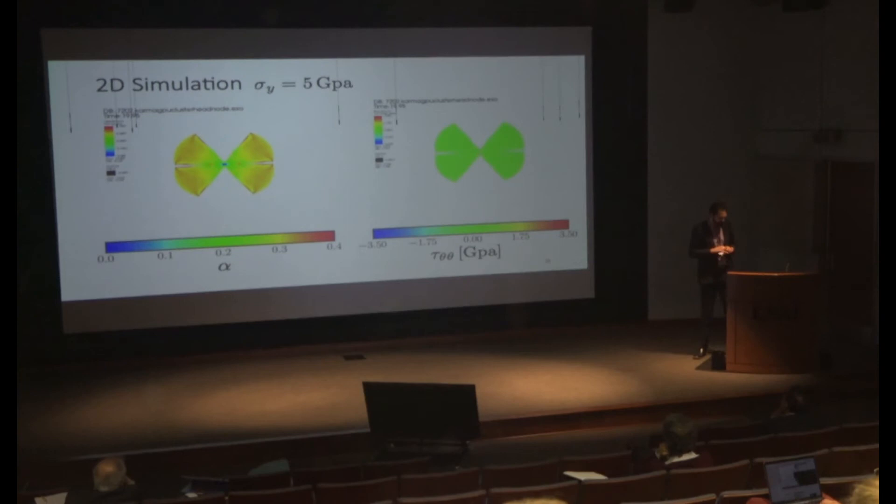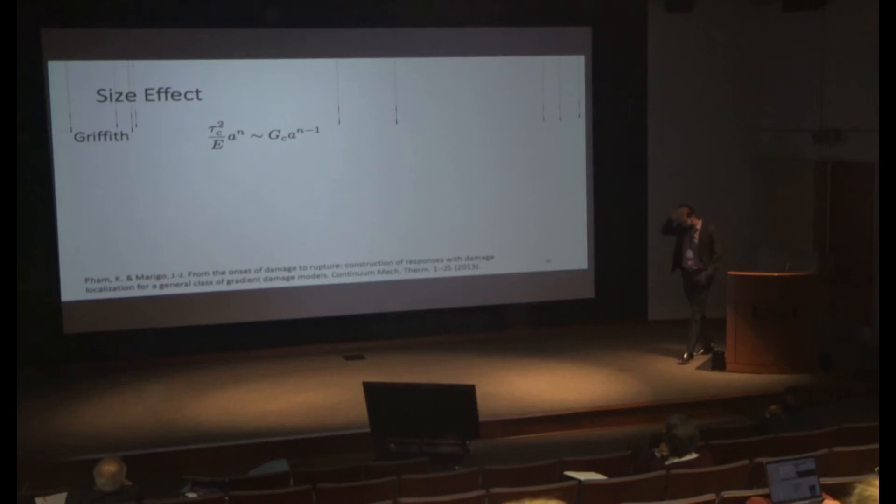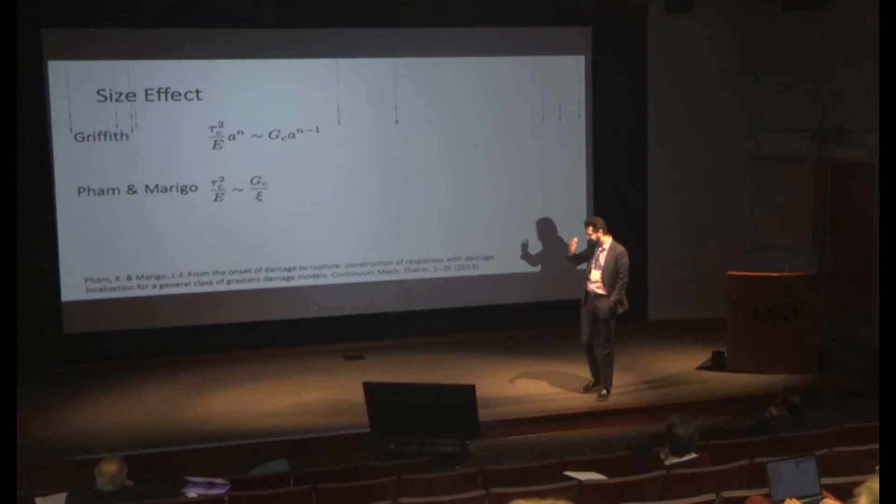So okay, I have pretty pictures, we understand something, but can we do any predictions? As Randy said, in this type of material, going back to Griffith, for brittle materials you can do this Griffith argument. How much energy am I releasing with my crack? That's my Gc times a surface or a length.